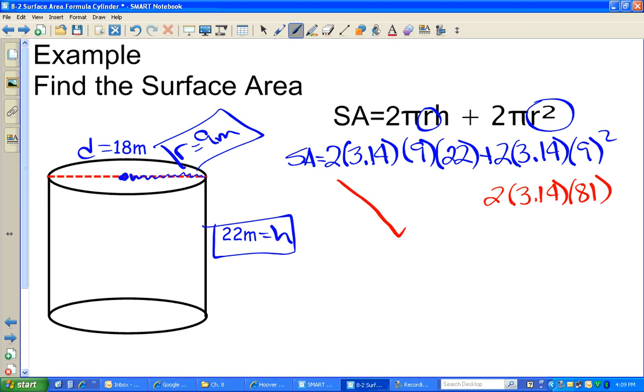I'm going to multiply these numbers together, multiply these numbers together, and then add the two results to give me my surface area. So 2 times 3.14 times 9 times 22. I got 1,243.44. Now 2 times 3.14 times 81. That gives me 508.68.